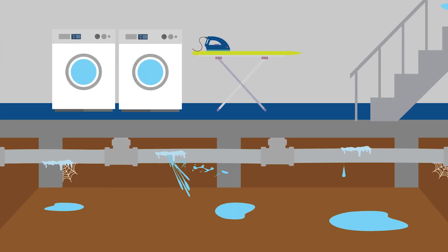Pipes located in unheated interior spaces are especially prone to ice blockage, including garages, attics, and basements.